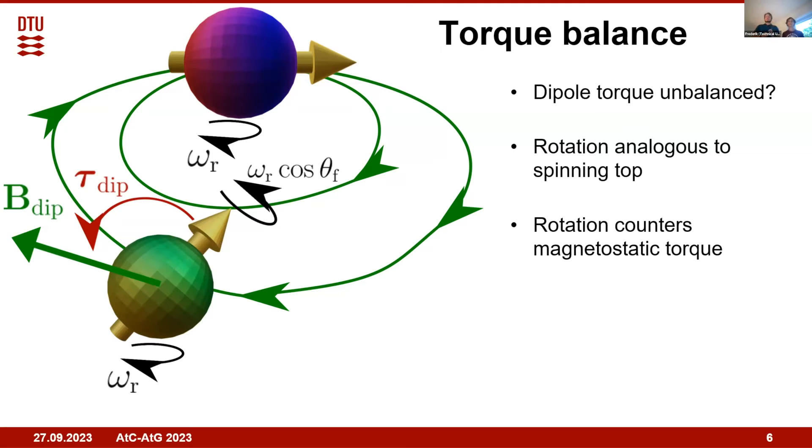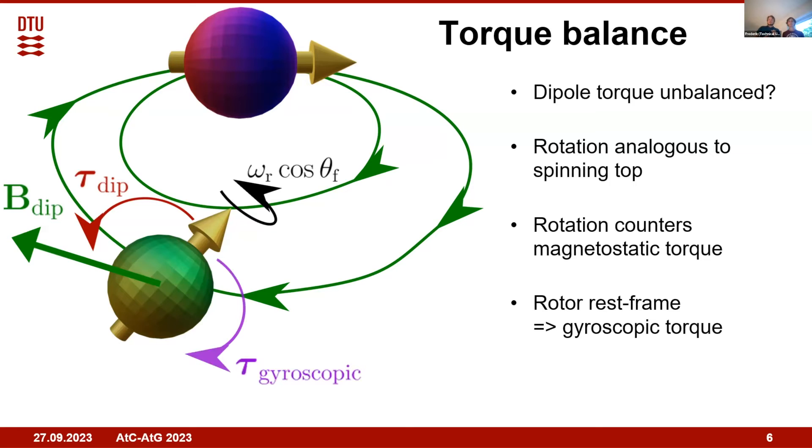Just like a spinning top can stay upright against gravity, the rotation allows the floater to resist this magnetostatic torque. When we analyze the system in the rest frame of the rotor, then the magnetic field and the dipole torque are constant, but we get this fictitious gyroscopic torque from the rotation and inertia of the floater.